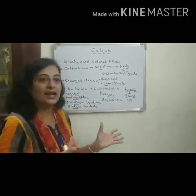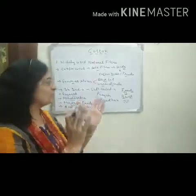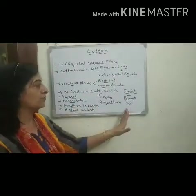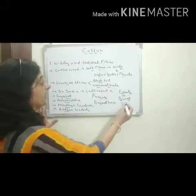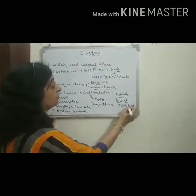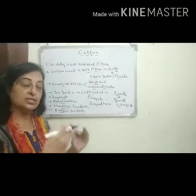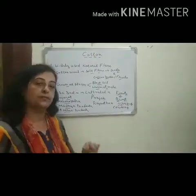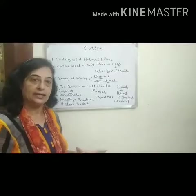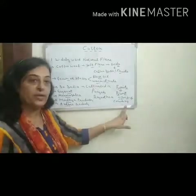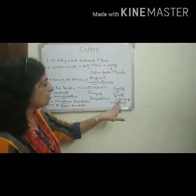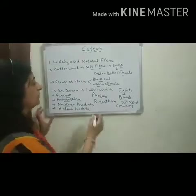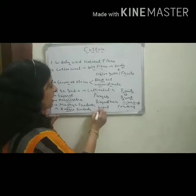It looks like a field covered with snow because of the white cotton wool along with black seeds. To use the cotton wool, we first have to separate the seeds from it. The process of separating seeds from the cotton wool is known as combing, and it is usually done by hand.